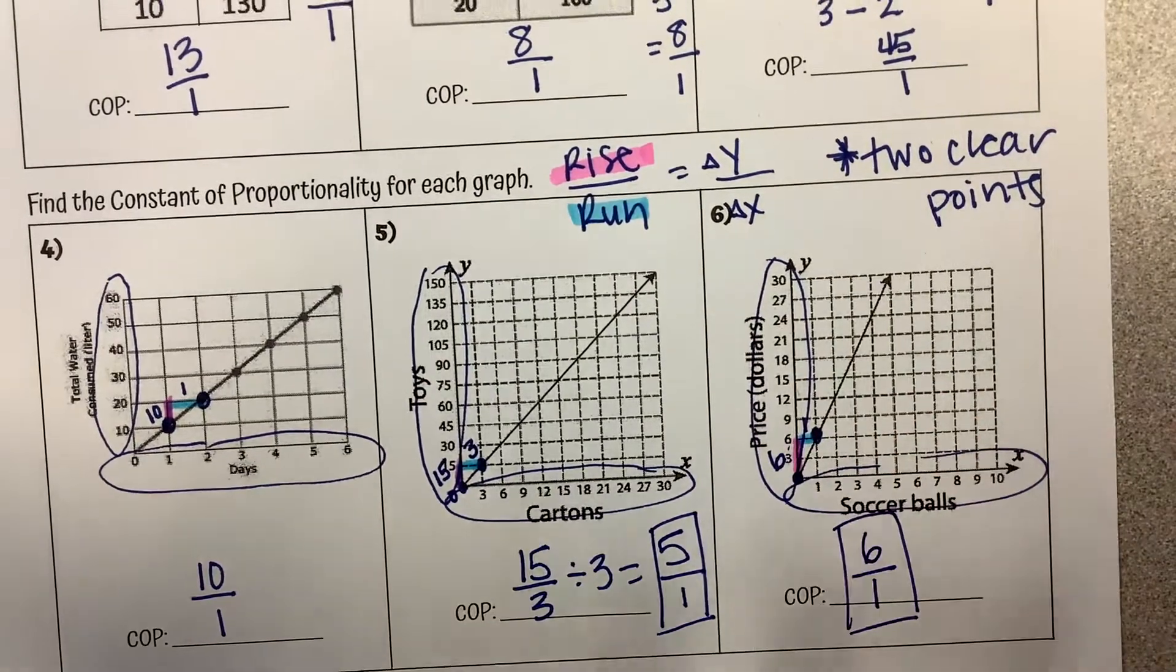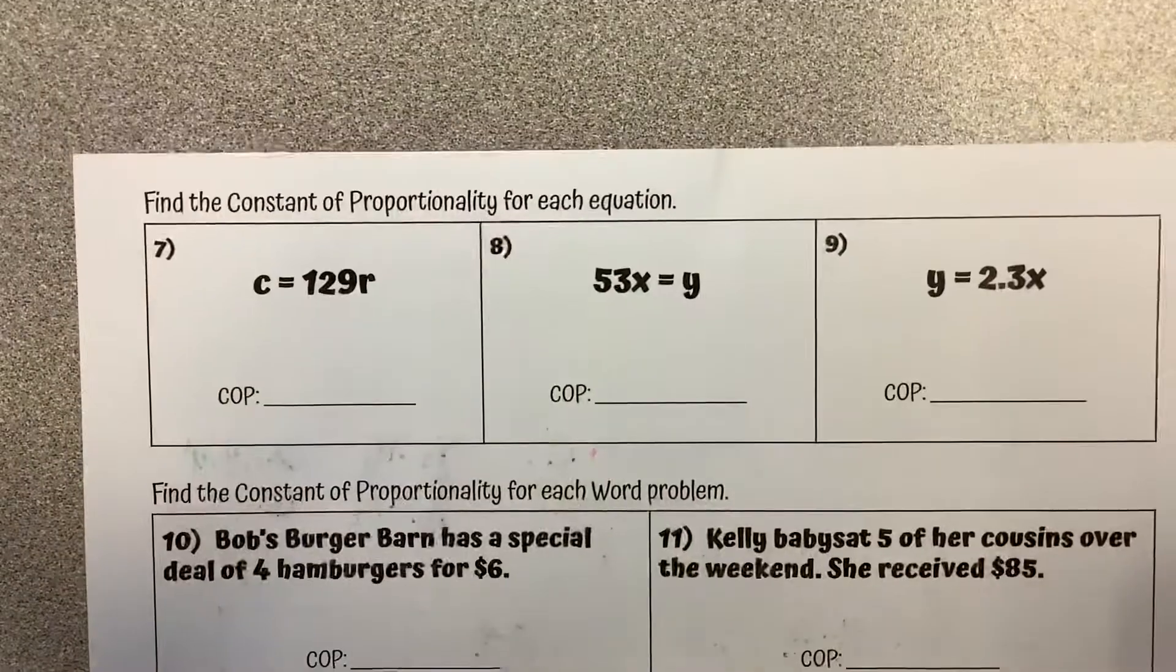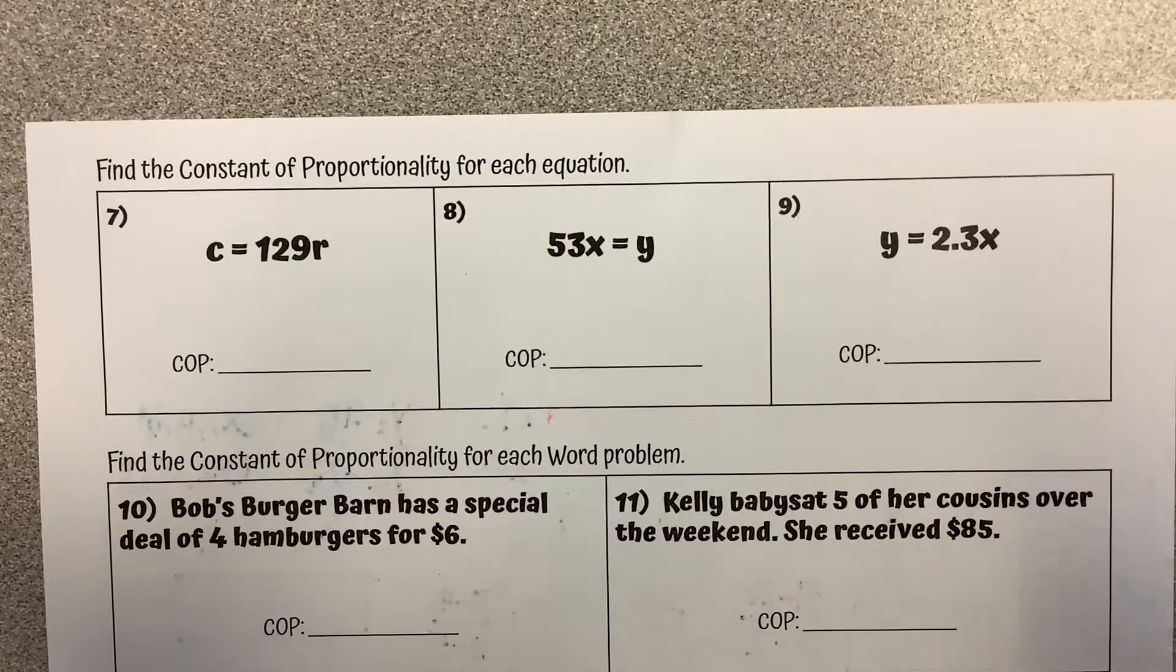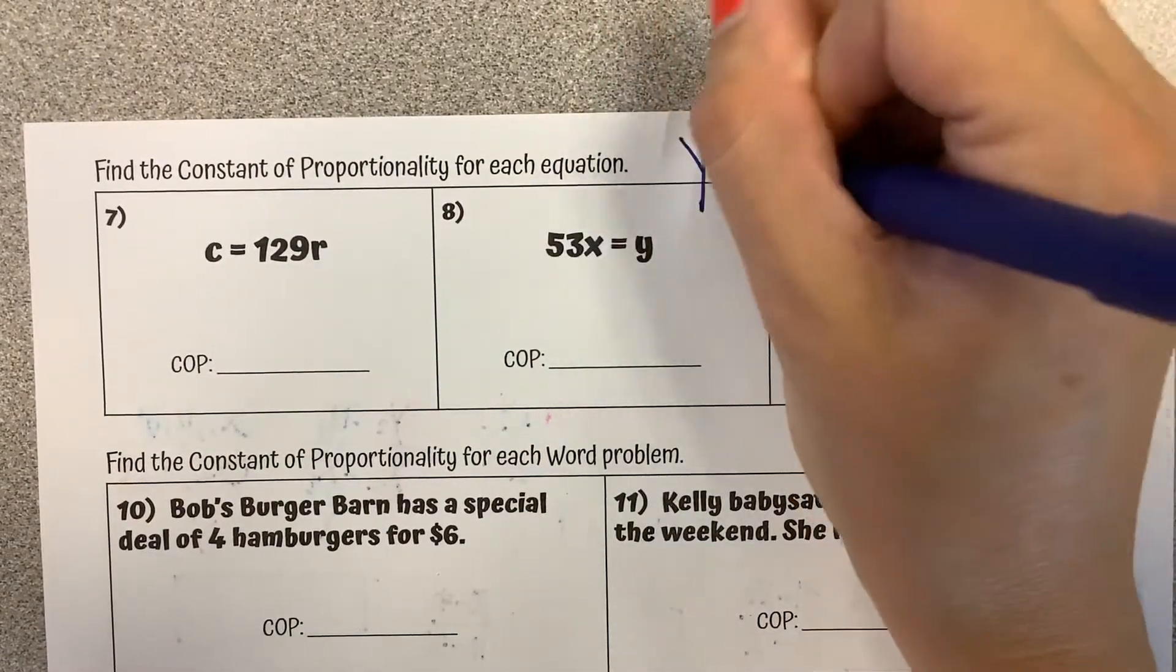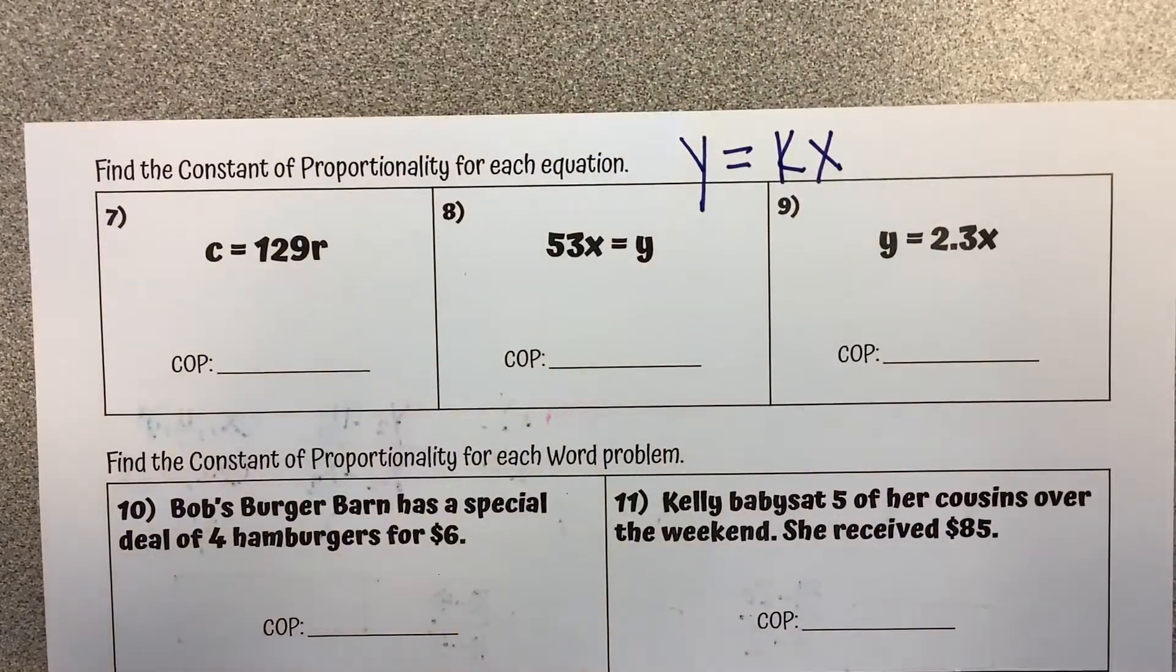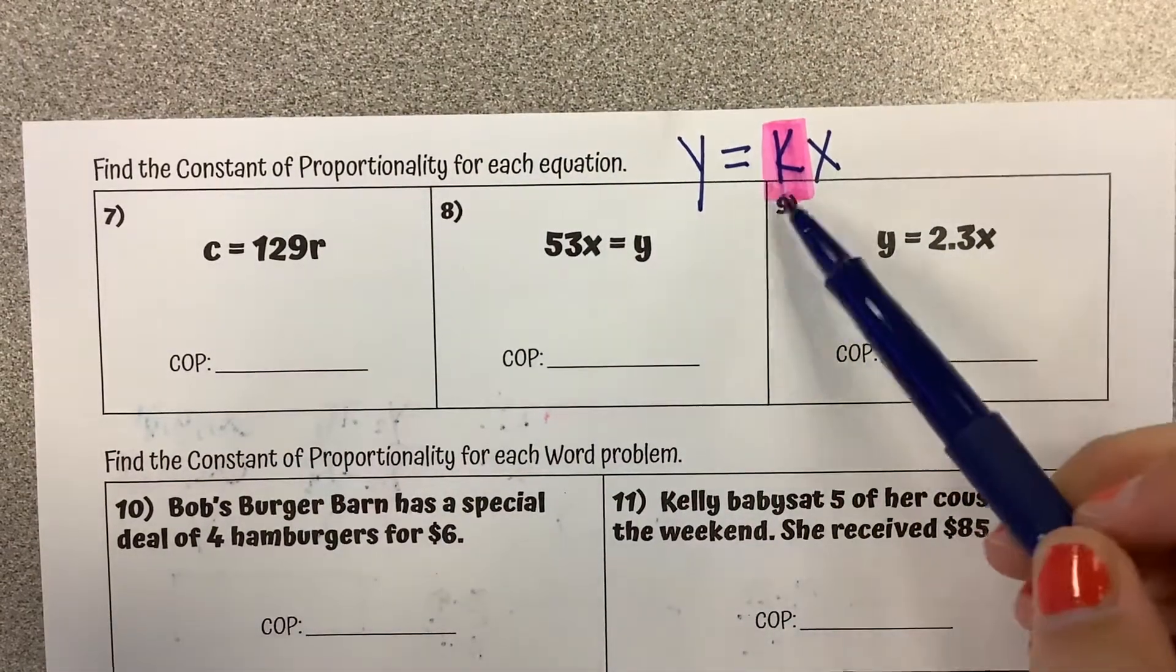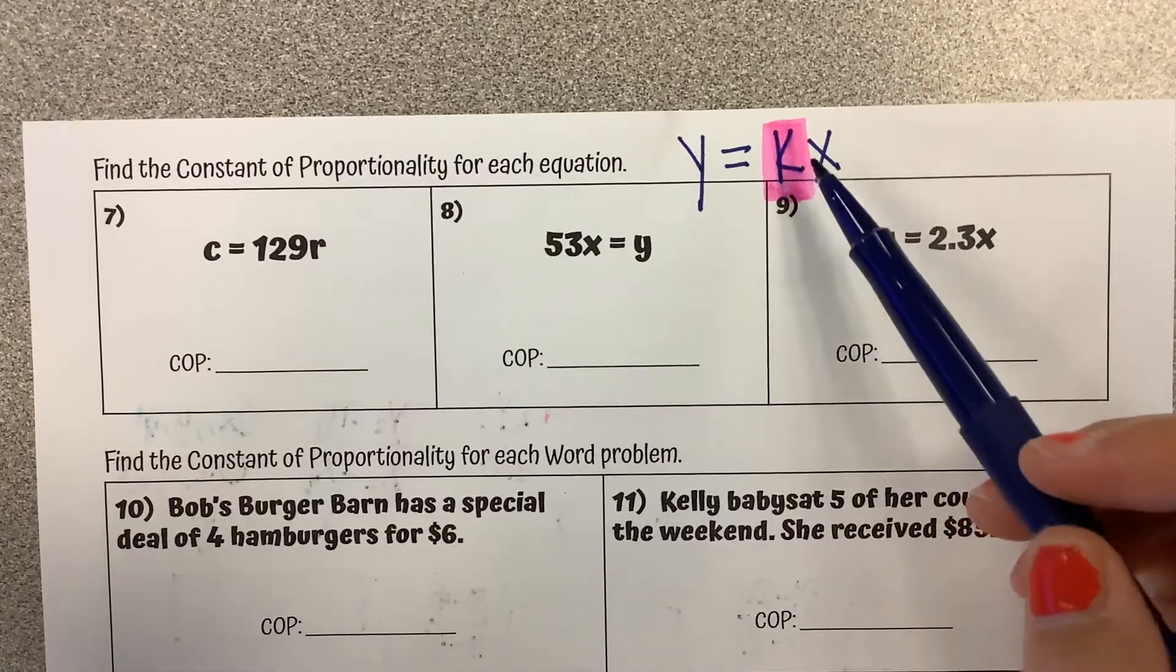So that was finding it given a graph. Our next example here is looking at it for equations. So when we are looking at a constant of proportionality, we have an equation in the form y equals kx. So whatever is being multiplied, there's a number in the place of the k. Whatever is being multiplied by x is our constant of proportionality.